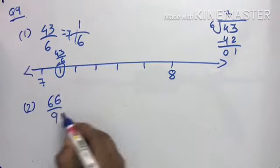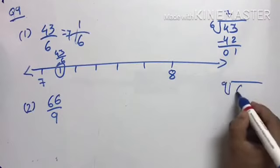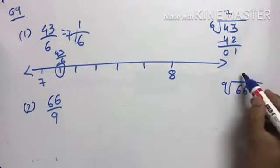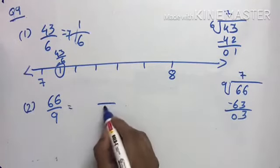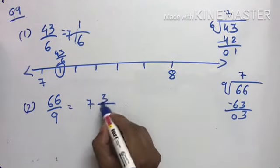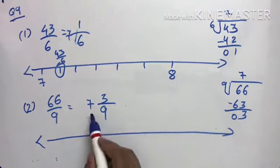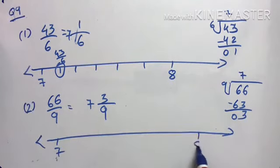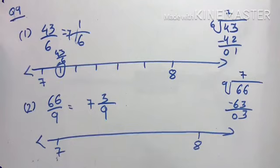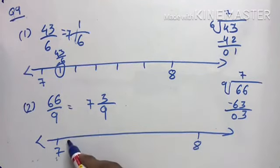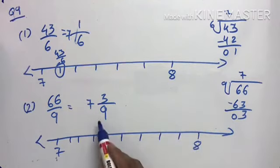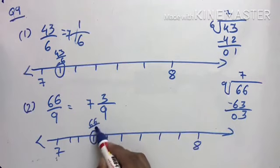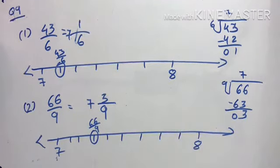For 66/9: divide 66 by 9 — 9 sevens are 63, remainder 3 — so it becomes 7 and 3/9. Draw the number line between 7 and 8 (since whole number is 7), divide into 9 equal parts, and mark the 3rd part as 66/9. This is how we represent improper fractions on a number line. Thank you.